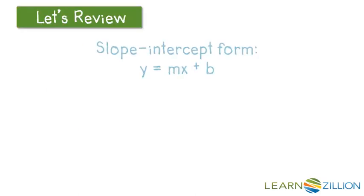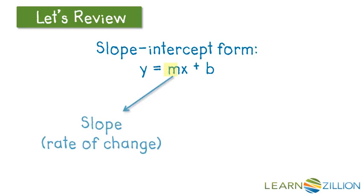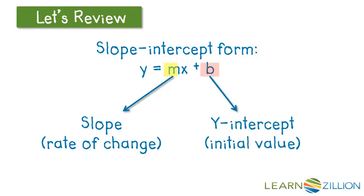Let's review. The slope-intercept form that we are most accustomed to seeing with a linear function is y equals m times x plus b, where m and b are the two numbers in question — m being the slope, or the rate of change, and b is our y-intercept, the initial value. It can be b plus or minus m times x, just as long as we understand that m, the slope, is the multiplier, the coefficient, and b is the constant value that's either added or subtracted.